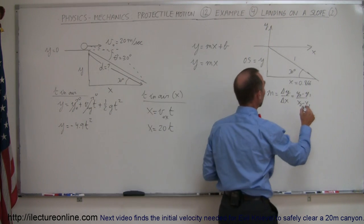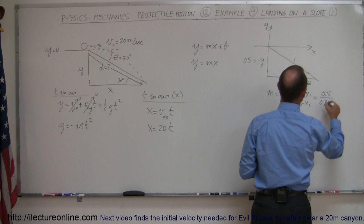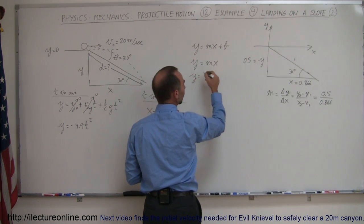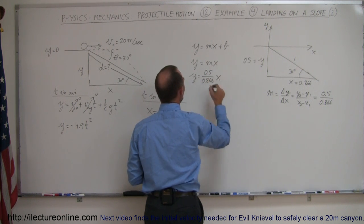We can find the slope that way, so the change in y would be 0.5, the change in x would be 0.866, and that becomes the slope of our equation. So now we have y is equal to the ratio of 0.5 over 0.866 times x.